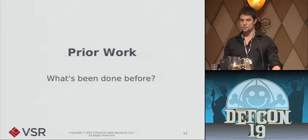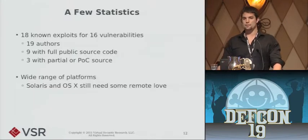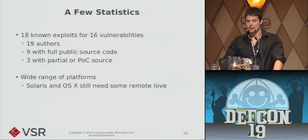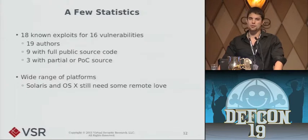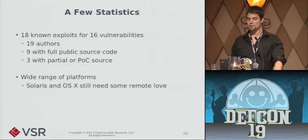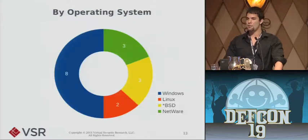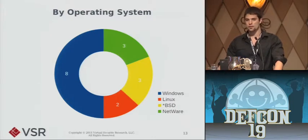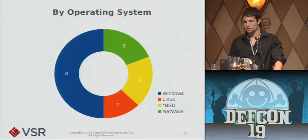Before getting into what I did, I'll talk about what's been done before. I researched every remote kernel exploit I could find and identified 18 exploits for 16 unique vulnerabilities, written by 19 people. Nine have full public source code, many as Metasploit modules; three have partial or proof-of-concept source code; the rest were discussed at conferences without code. Breaking down by OS: half of the 16 vulnerabilities were in Windows — four in core components, three in wireless drivers, one in a Symantec firewall. Three in NetWare, three in various BSDs, and two in Linux, one of which was in a third-party driver.